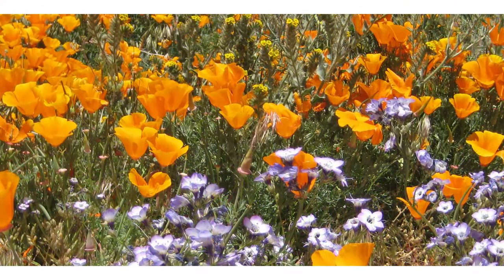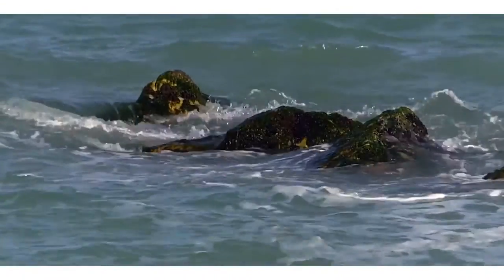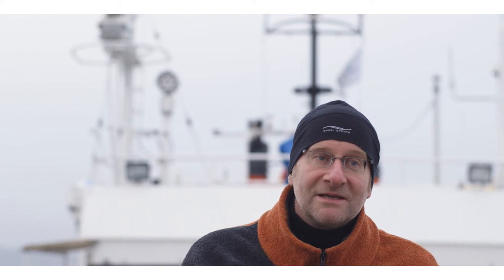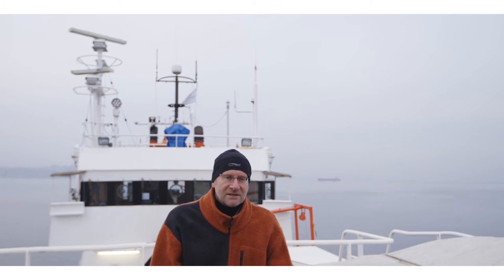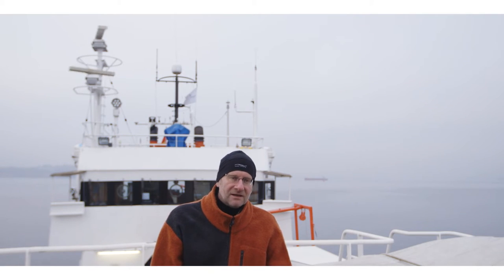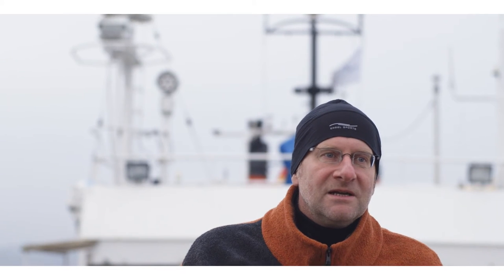Green plants come from green algae — the sister or ancestral group are green algae we still find today in the oceans. Animals originated in an as-yet-unknown process during the Cambrian explosion, approximately 560 million years ago, when suddenly all the major animal body plans emerged. The marine legacy is clear: 28 of those phyla are marine, while only 11 are terrestrial or freshwater. That tells you that the bulk of the deep diversity is contained in the oceans.